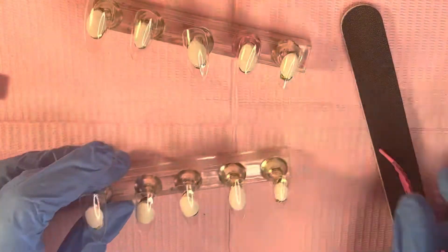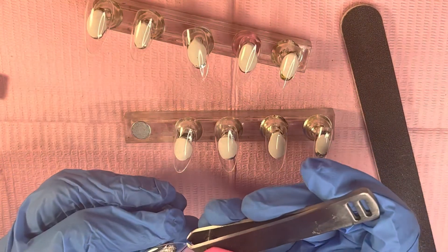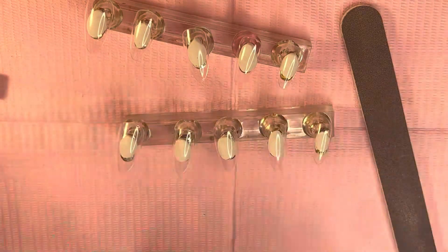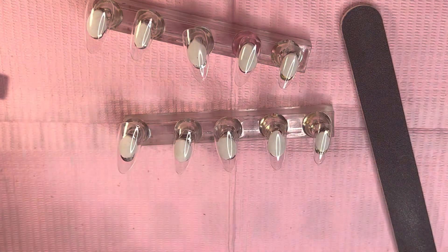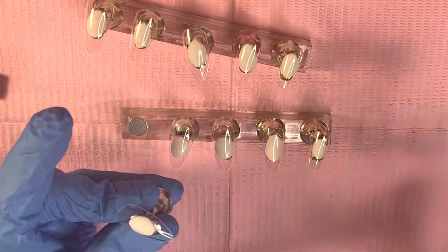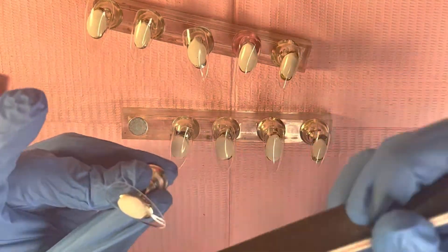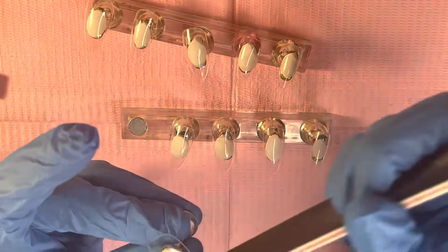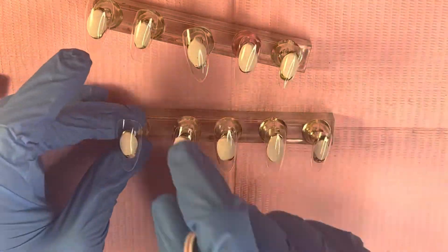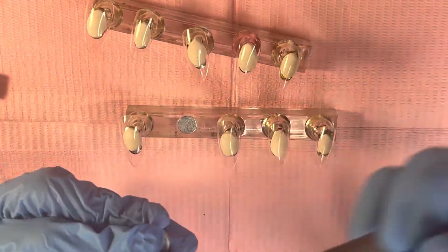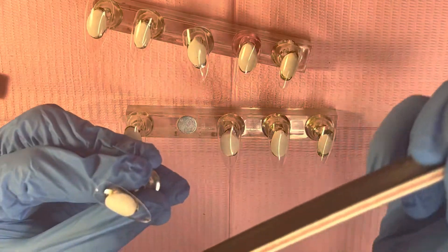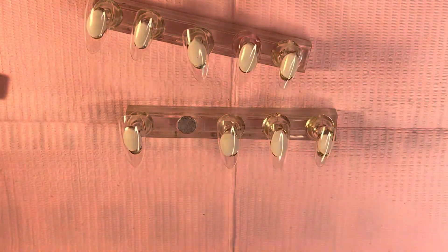She gave me full permission to take over this set. She showed me a picture of the dress that she's going to be wearing because she's going to her sister's wedding. It's a green color, so we're going to be doing a French tip green color set today.